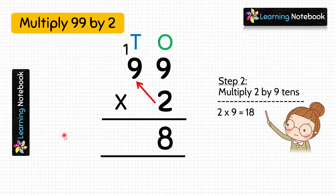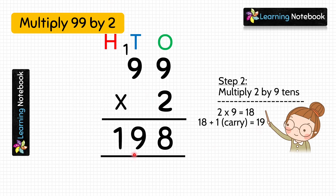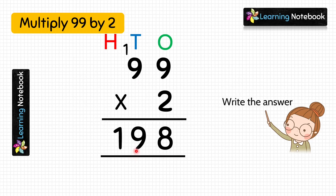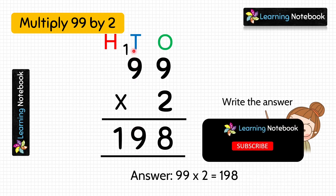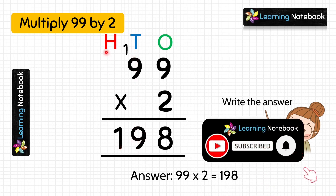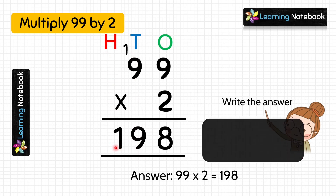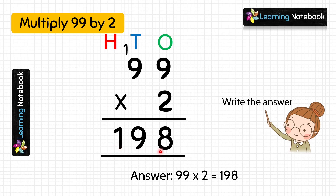So we will add this carry to 18. We will do 18 plus 1 carry equals to 19. So let's write 19 in the answer: 9 at the 10's place and 1 comes at the 100's place. So we have got the answer as 198. Now students, I am sure you have learnt how to multiply a two-digit number by a one-digit number with or without carrying.